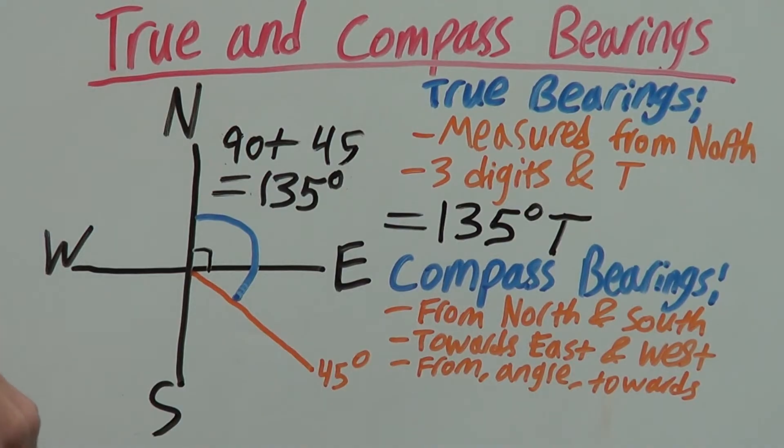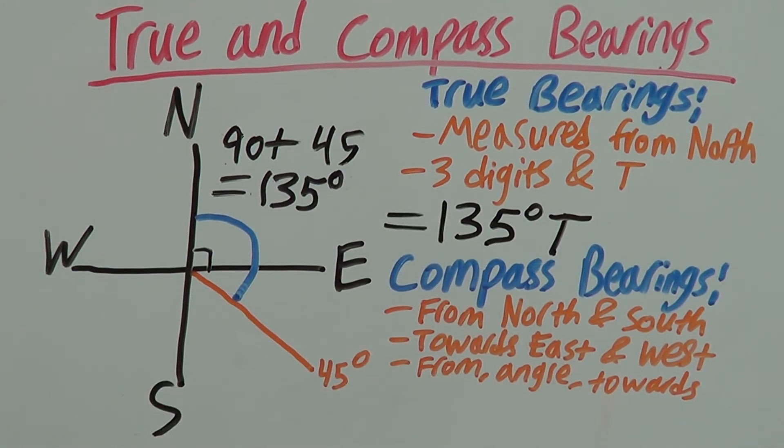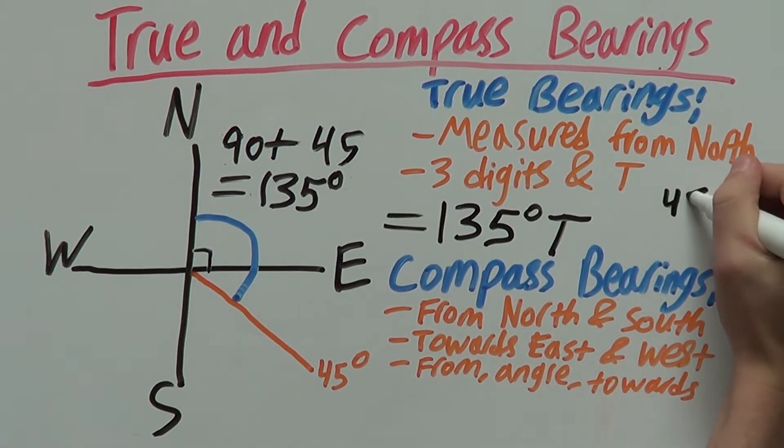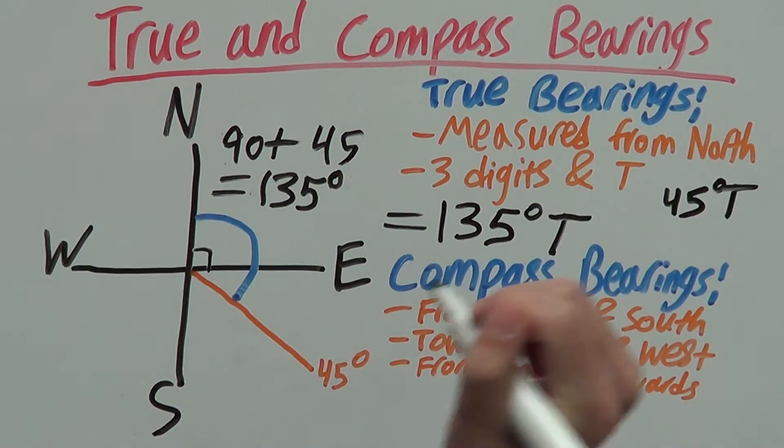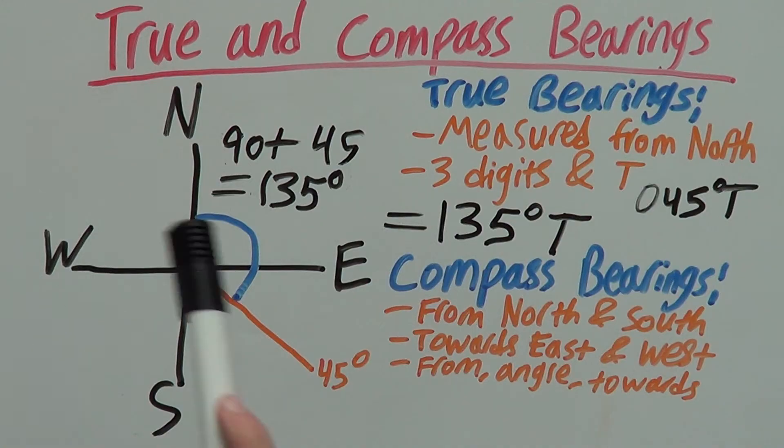And you may be wondering, what if it is below 100 degrees, since in that case you'd only have two digits. For example, 45 degrees T. How would you write those three digits? Well, in this case, you'd write a zero out the front. So the true bearing of this example is 135 degrees T.